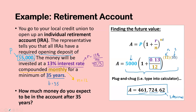It shouldn't be too difficult. The main thing to watch out for is the compounding number n — make sure you understand what value to plug in when given different keywords like quarterly or daily instead of monthly.